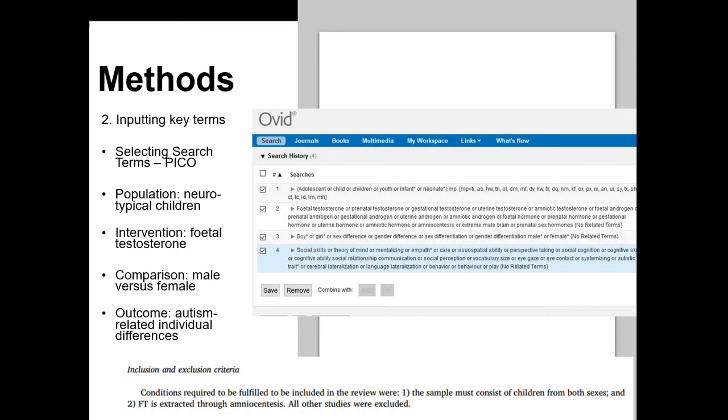After selecting the databases, I put in the key terms represented by PICO, short for population, intervention, comparison, outcome. For population, we had neurotypical children. Most studies on fetal testosterone had neurotypical children. Intervention had to do with fetal testosterone. We were very particular in selecting for amniocentesis-tested fetal testosterone.